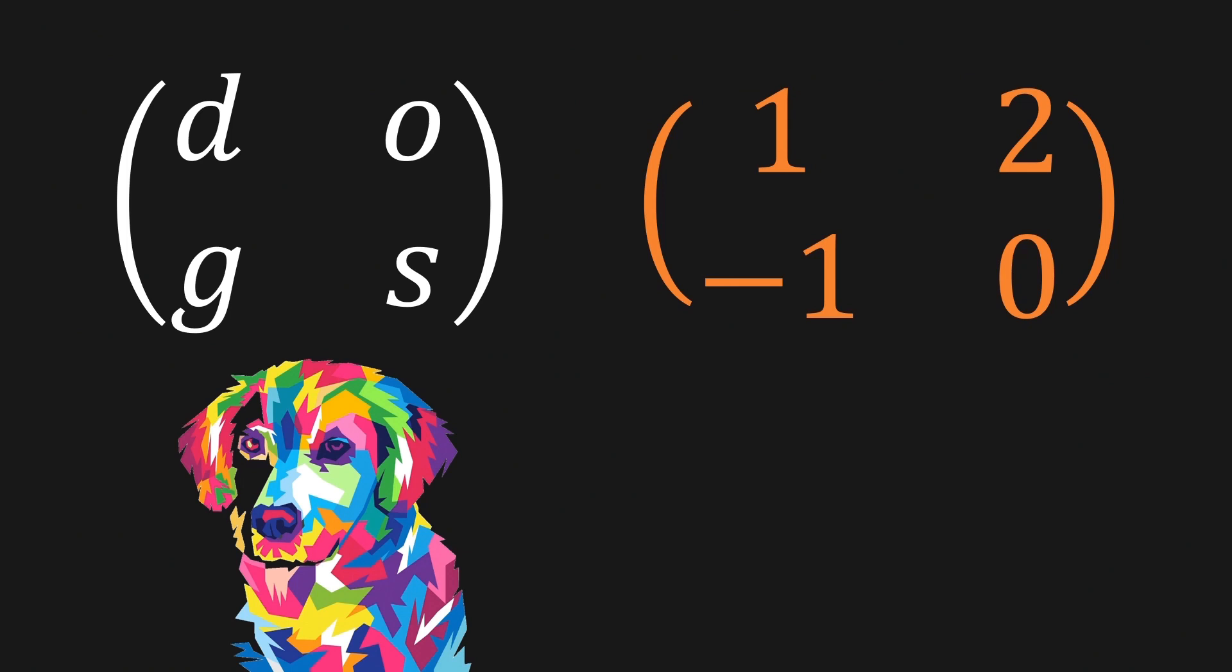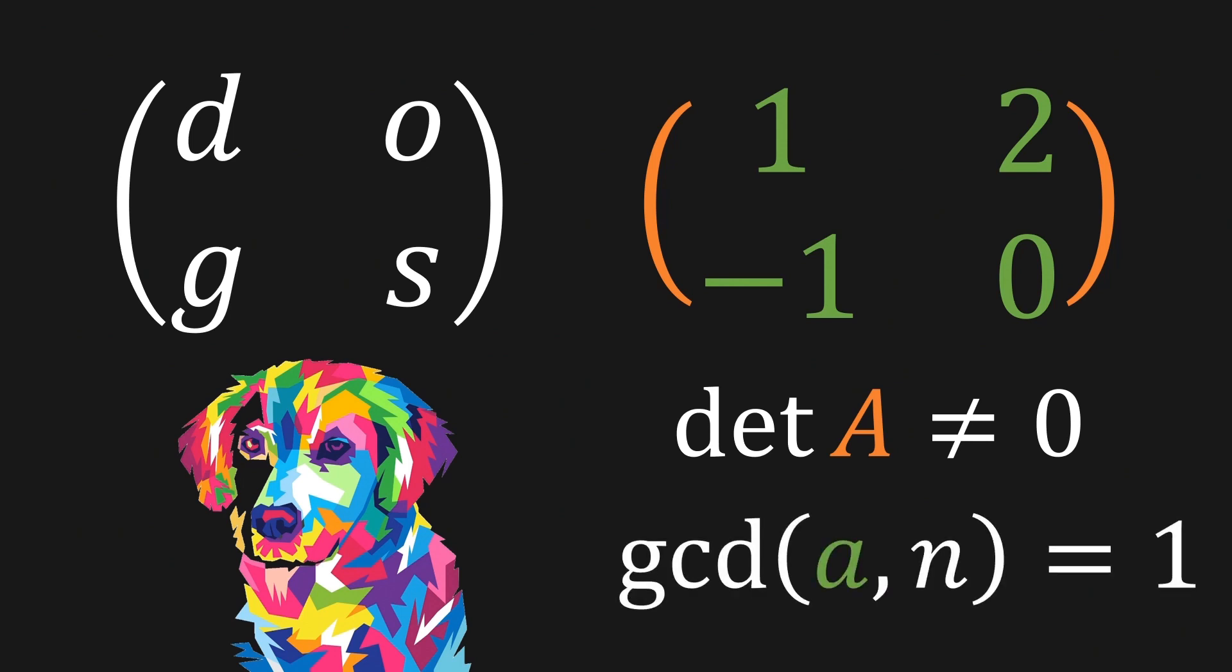As you know from linear algebra, a matrix A is only invertible if and only if the determinant is not zero. On top of that, the elements inside the matrix need to have a multiplicative inverse modulo n, which means the greatest common divisor of a and n needs to be 1. In this case we say that a and n are coprime.